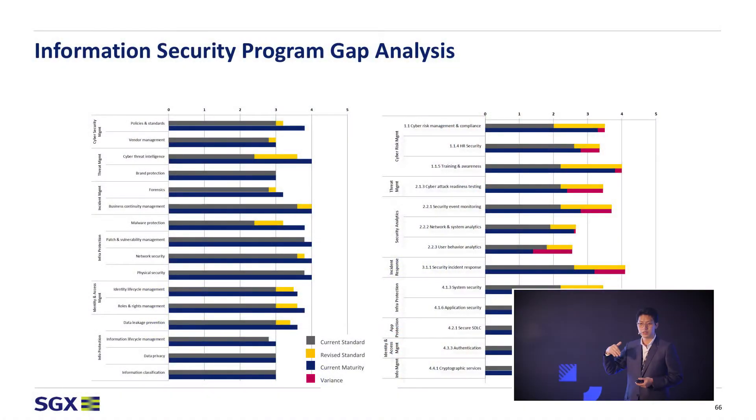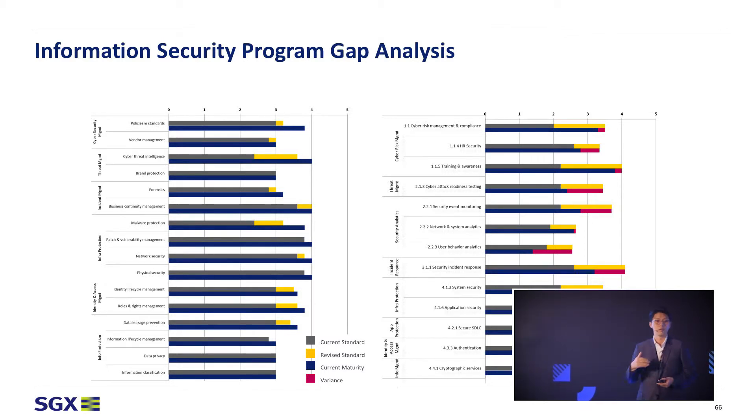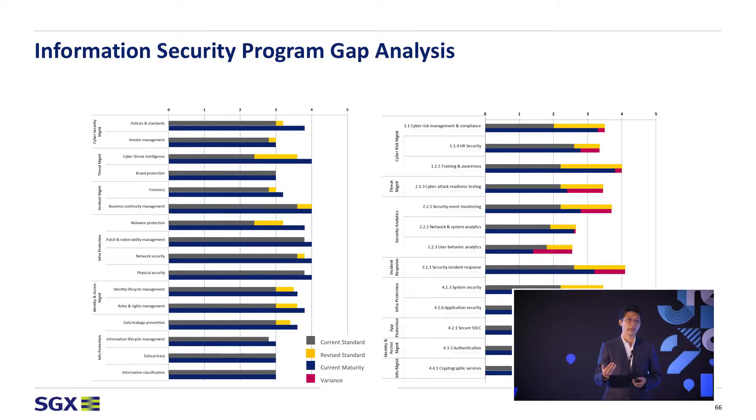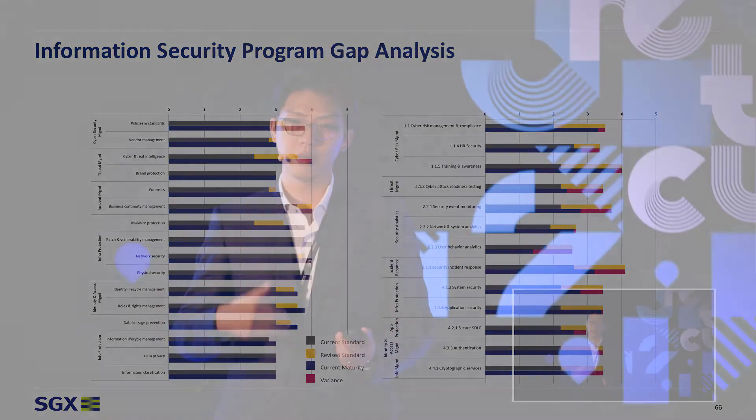This is our threat and control matrix — a set of more operational metrics giving an idea of how we are responding to emerging threats on a monthly basis. For the layout of threats, there is a narrative we're trying to tell. Right at the top, we have reconnaissance activity, which is a leading indicator for us to see if there is significant interest in SGX and whether there are people targeting us — a significant increase in reconnaissance activity.